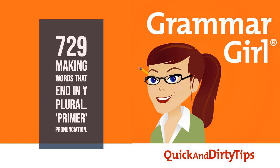In contrast, if the Y comes right after a vowel, we just add an S to the word to make it plural. So journey becomes journeys, J-O-U-R-N-E-Y-S. Play becomes plays, P-L-A-Y-S. And cowboy becomes cowboys, with just an S at the end.